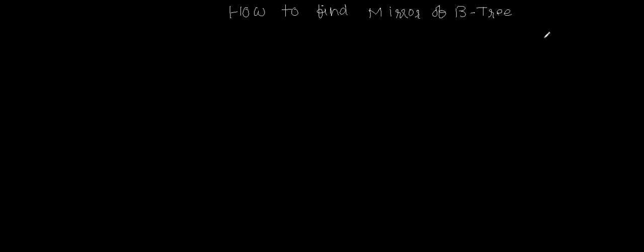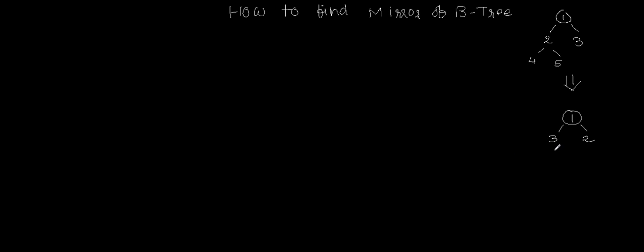Let's start with the definition: what is the mirror of a tree? Say suppose you have a tree like this — node 1, with left and right children 2 and 3, and node 2 has children 4 and 5. When we convert this tree into its mirror, the left and right subtrees will be different. The root will be the same, but 3 and 2 swap, and 2's left and right children will also be swapped.